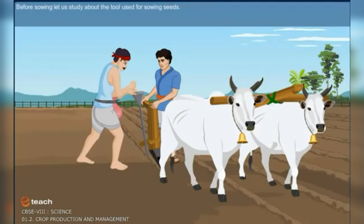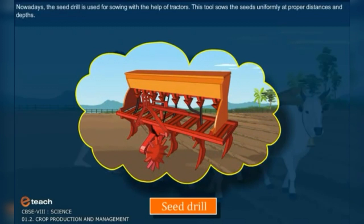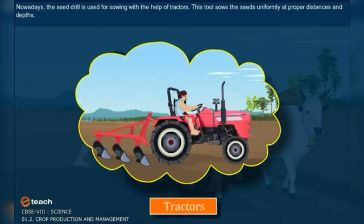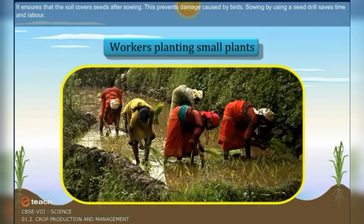Before sowing, let us study about the tools used. The traditional tool used for sowing seeds is shaped like a funnel. The seeds are filled into the funnel and passed down through two or three pipes having sharp ends, which pierce into the soil and place seeds there. Nowadays, the seed drill is used for sowing with the help of tractors. This tool sows seeds uniformly at proper distances and depth, ensures that soil covers seeds after sowing, and prevents damage caused by birds. Sowing by using a seed drill saves time and labour.